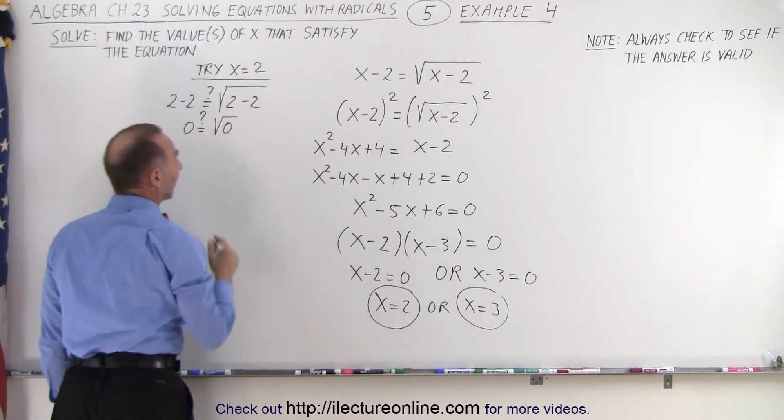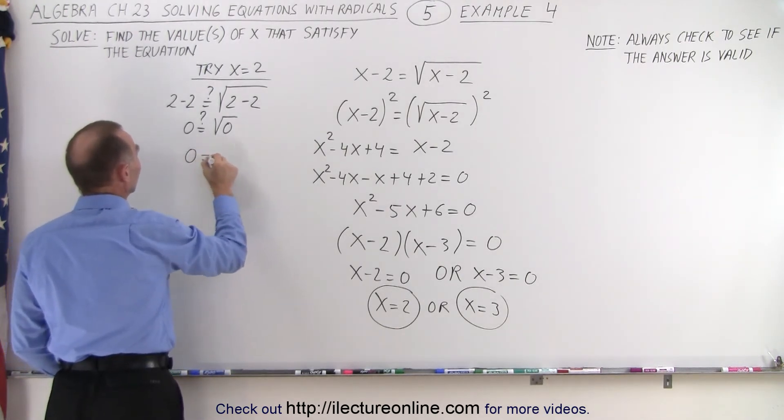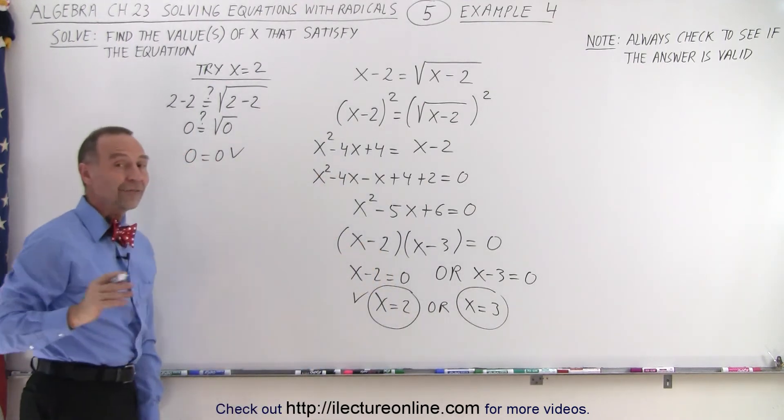So obviously this is 0 equals the square root of 0. And you know that the square root of 0 must be 0. So yes, 0 equals 0. And that checks which means x equals 2 is a valid answer.